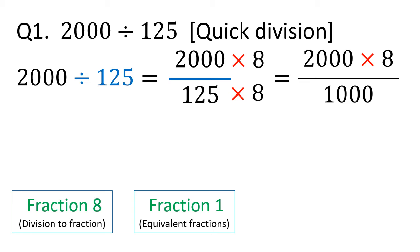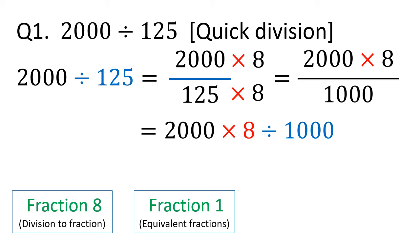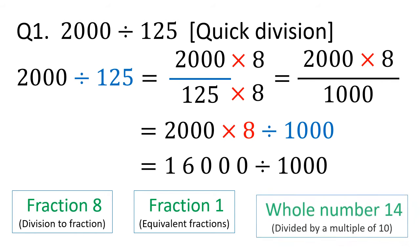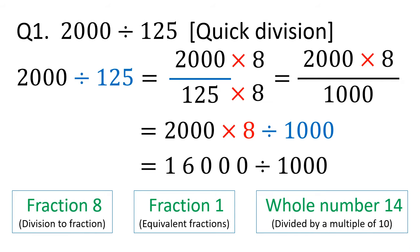We can change the fraction back to a division, so it will be 2000 times 8 divided by 1000. That is equal to 16000 divided by 1000. Do you remember how to divide a whole number by 1000? If not, please refer to the video Whole Number 14.